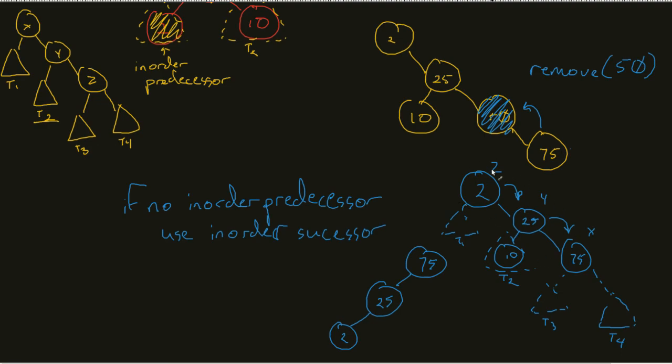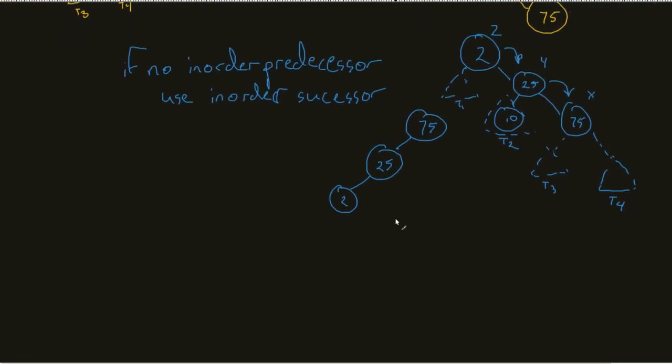Now, given that we're dealing with a right-right zig-zig, we would give T1 and T2 to X. So in this case, I would come in and 10 would be given to the 2.